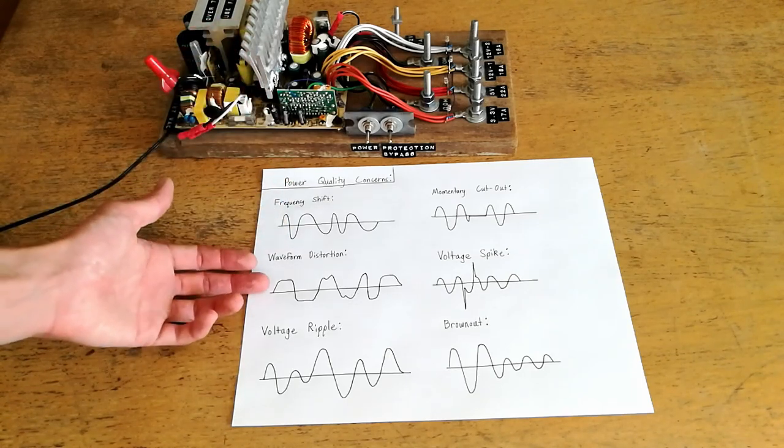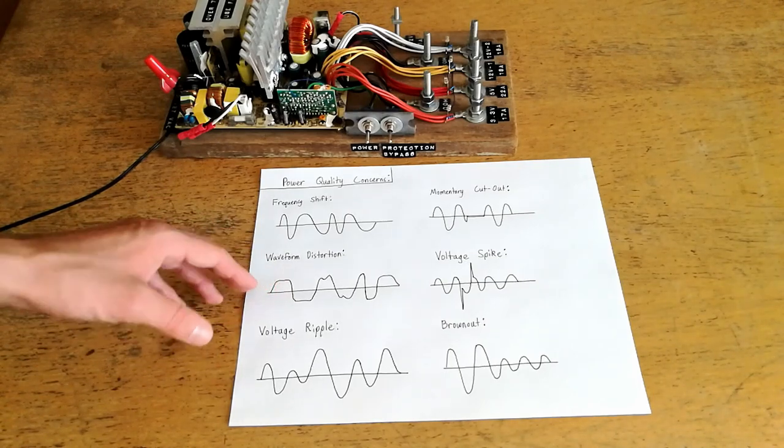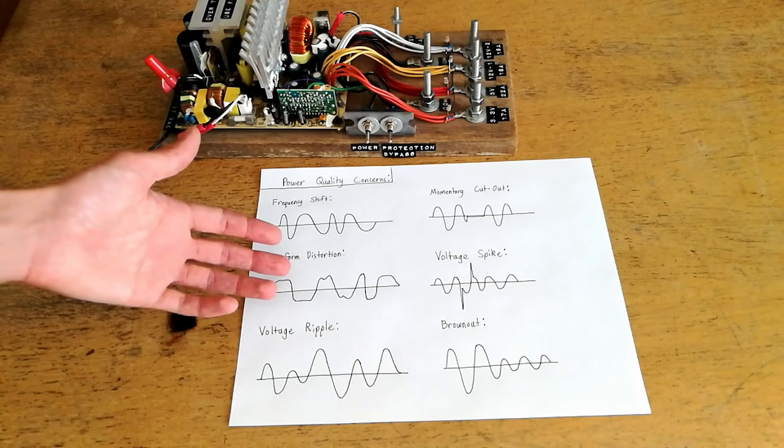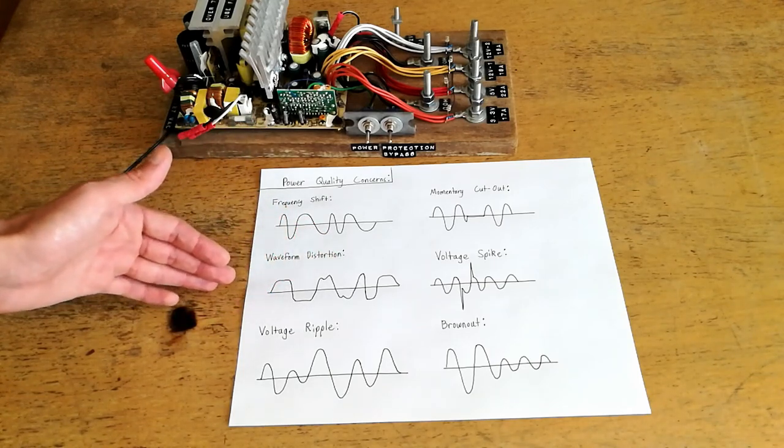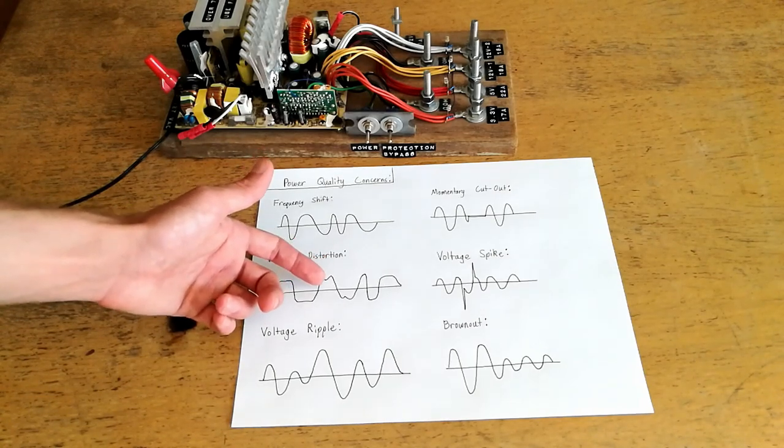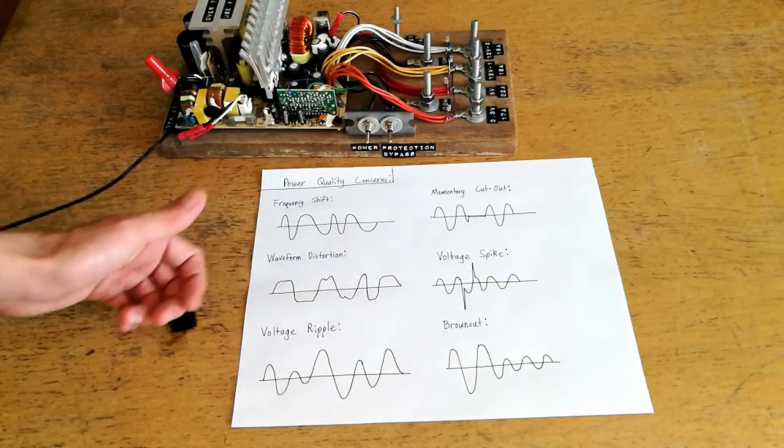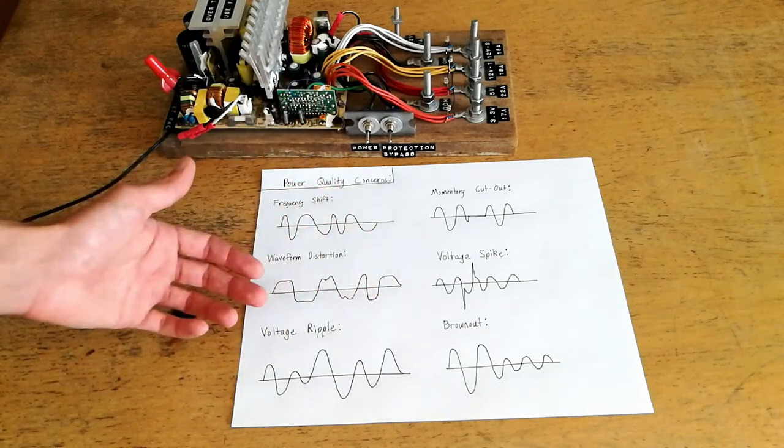Waveform distortion is another problem. This can happen when too many reactive loads with say rectifiers in them are connected to a circuit and perhaps the tops of the waves get chopped or perhaps due to the way that an AC signal is generated there could be ripples in the AC waveform itself among other waveform distortion issues.